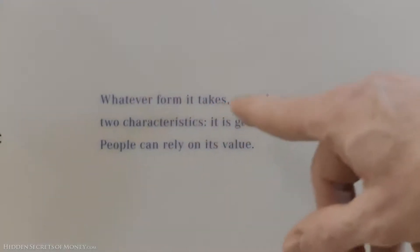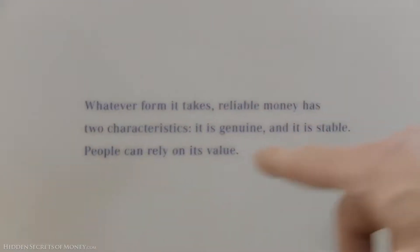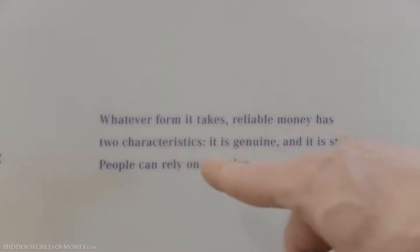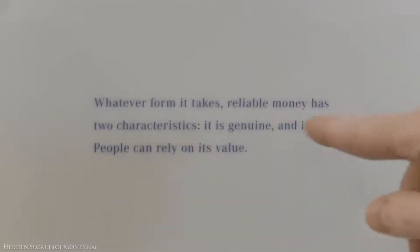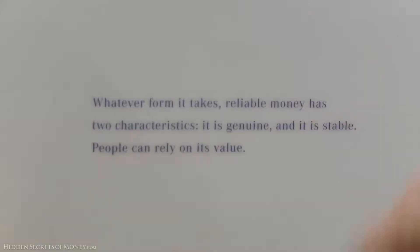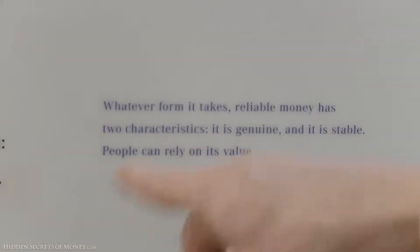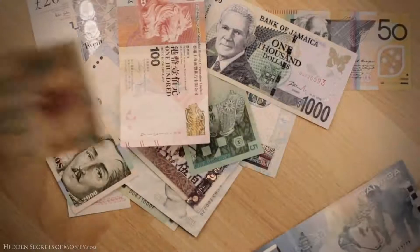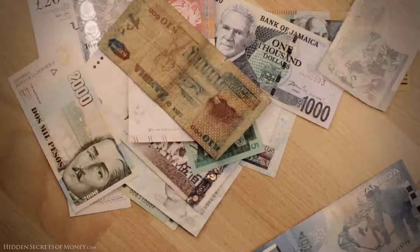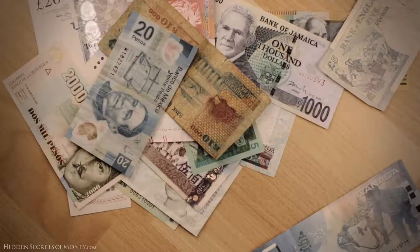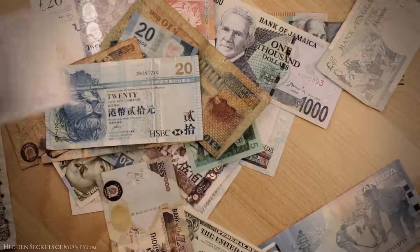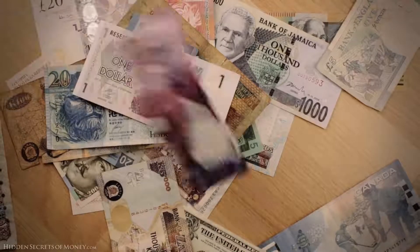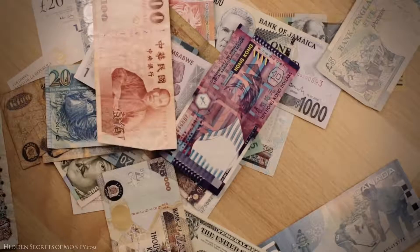Whatever form it takes, reliable money has two characteristics: it is genuine and it is stable. People can rely on its value. But what fiat currency around the planet has maintained its value? They all fall in value. So right away you can see the difference — they're talking about currency here.